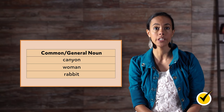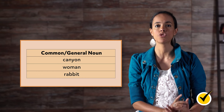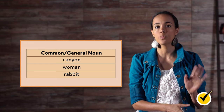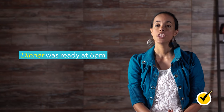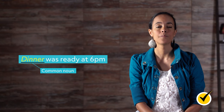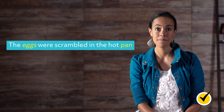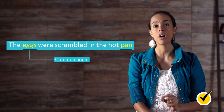Nouns can be broken down into different categories depending on what the noun is doing in the sentence. Common nouns are words that refer to general things — they do not have a specific name like John or Eiffel Tower, which would be proper nouns. Here's an example: Dinner was ready at 6pm. The common noun is dinner. Another example: The eggs were scrambled in the hot pan. This sentence has two common nouns, eggs and pan, because they are both things or objects in the sentence.